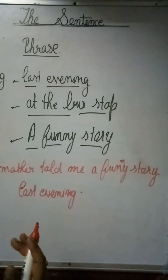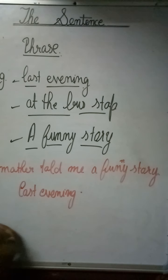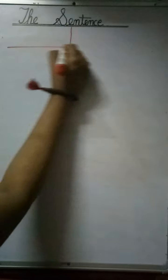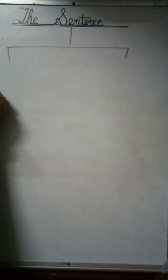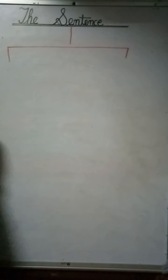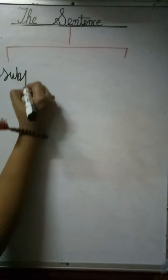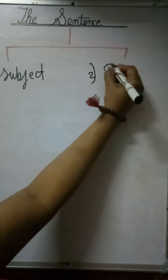So next, whenever we form a sentence, it is carrying two parts. A sentence is made up of two parts. The first is the subject, and the second one is the predicate.